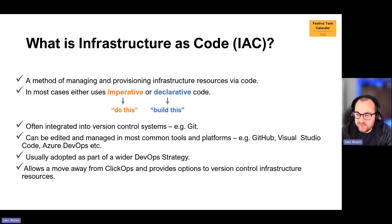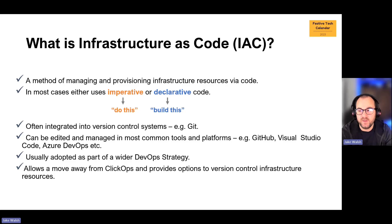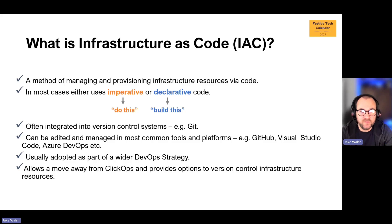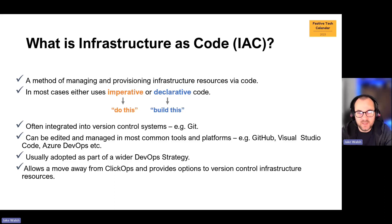So what actually is infrastructure as code? It's a method of managing and provisioning infrastructure resources via code. In most cases it's imperative — for example, do something — or declarative — build something. It's often integrated into version control systems like GitHub and Azure DevOps, and it's usually edited in tools like Visual Studio Code. Infrastructure as code is usually adopted as part of a wider DevOps strategy, and it enables a move away from ClickOps — repeatedly doing things manually in the portal.